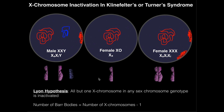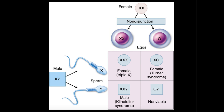In this video, I want to talk about abnormal conditions where we have a faulty number of X chromosomes. There are three primary disorders: Klinefelter syndrome, Turner syndrome, and Triple X syndrome. These are aneuploidies where we have an abnormal number of X chromosomes. Before discussing them, I want to explain how this occurs.